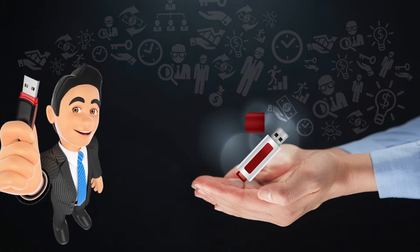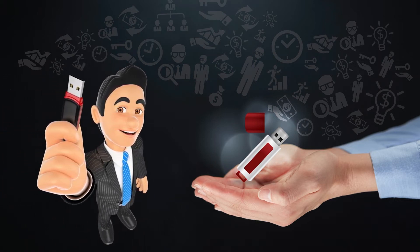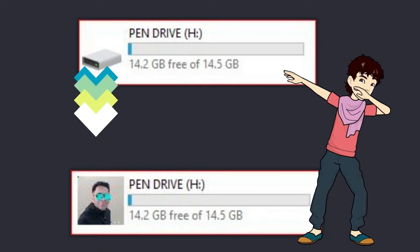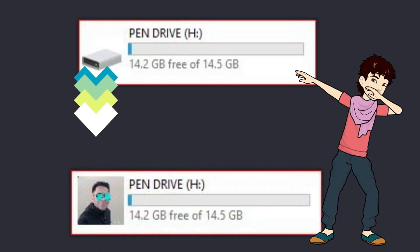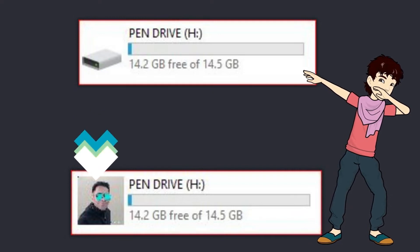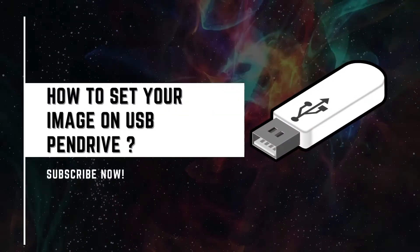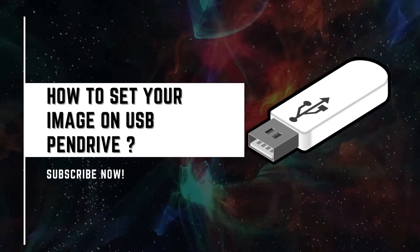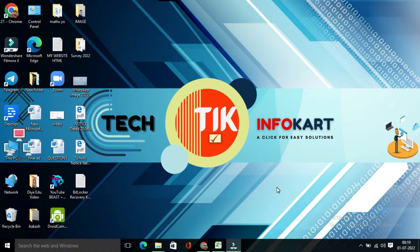When you insert the pen drive on your PC you will see the default icon, but do you know you can change the pen drive icon easily? You can add a logo or any image on your pen drive icon. Today I am going to show you a trick by which you are going to find your image on your USB pen drive icon. Let's begin. Welcome to my channel, Tech Info Card.